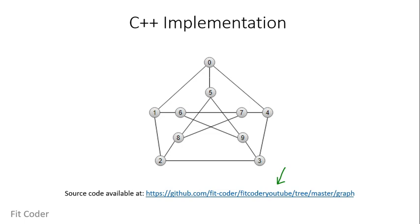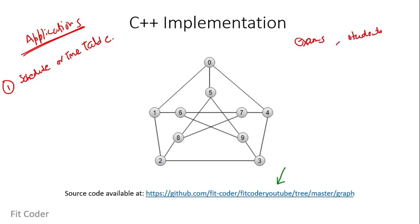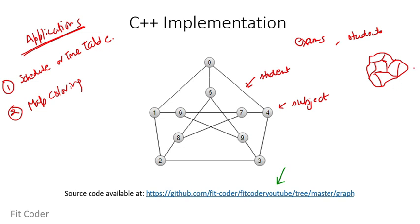Applications of graph coloring: the first is making schedules or timetables. If we have exams and students taking various subjects, we need to schedule exams so that no two exams with a common student occur at the same time. This can be modeled as a graph where vertices are subjects and edges represent a shared student, and we assign colors so no student has two exams at the same time.